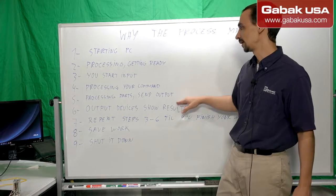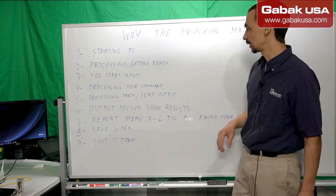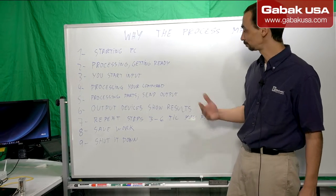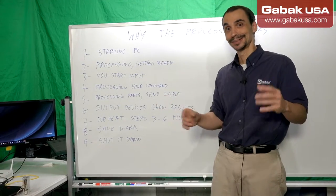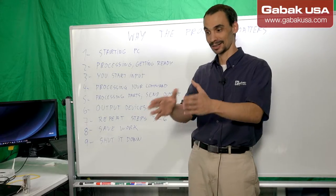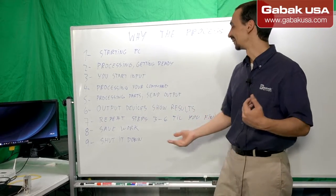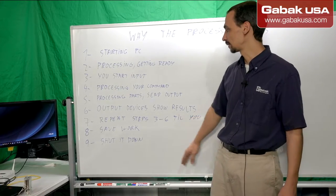Number six, output device shows a result. So you will see the result. Like I said, maybe if it is a printer, you will see something that comes on the paper or something on the screen or whatever. That will be step number six.